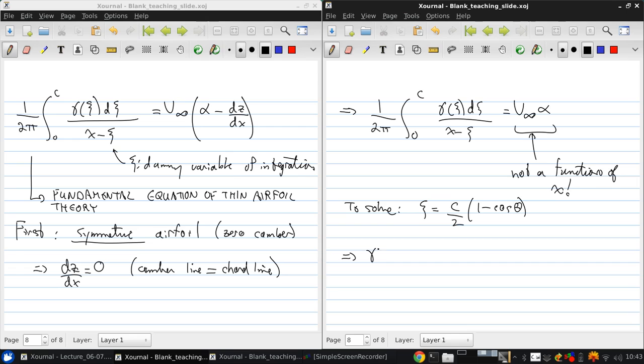This then gives us the following: gamma of theta is 2 alpha v infinity 1 plus cos theta over sin theta. Now, Kutta condition, we need to check what's gamma at x equals the chord. So again, this is at theta equals pi. Theta equals pi, cosine is minus 1. So we get 1 minus 1 is zero. So this is good.